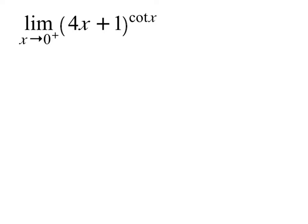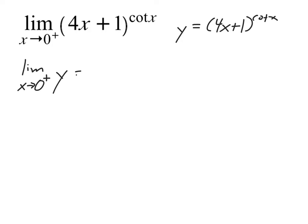Normally when we look at these functions, we only worry about writing in one side — the limit as x is approaching 0 from the right-hand side of our function. But technically we're really looking at an equation here: y equals 4x plus 1 to the cotangent of x. And we're really figuring out what is the limit as x is approaching 0 from the right-hand side of y.